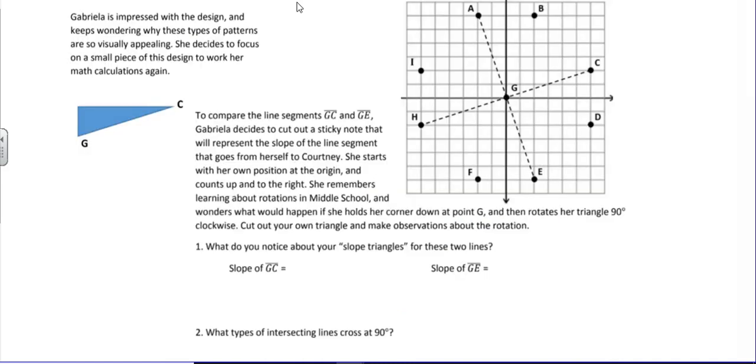The dance team designs another formation, and Gabriella is impressed with the design and keeps wondering why these types of patterns are so visually appealing. She decides to focus on one small piece of the design to work her math calculations again. To compare the line segments GC and GE, Gabriella decides to cut out a sticky note that will represent the slope of the line segment that goes from herself to Courtney. She starts with her own position at the origin, and she counts up and to the right. From Gabriella to Courtney go up 2 and then over 6.